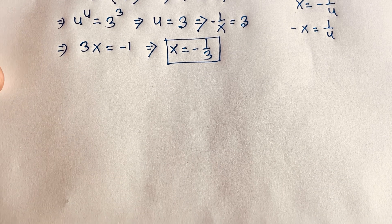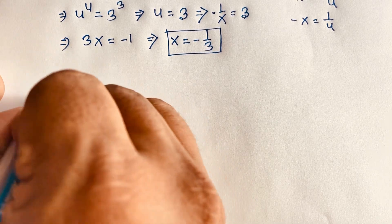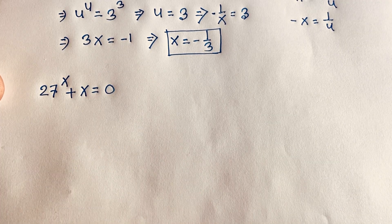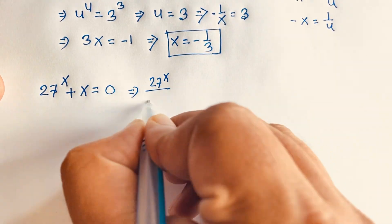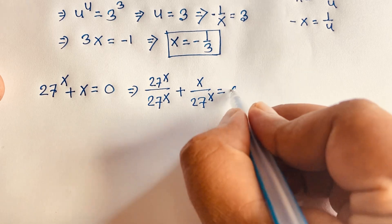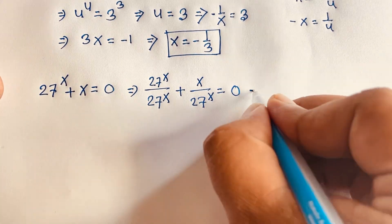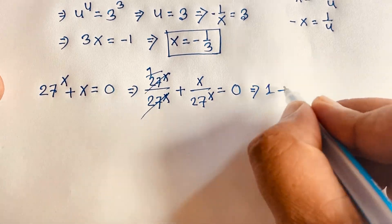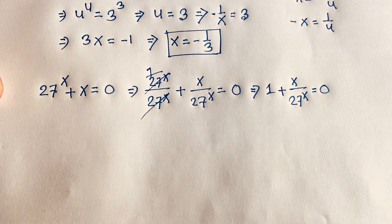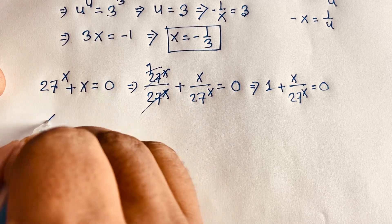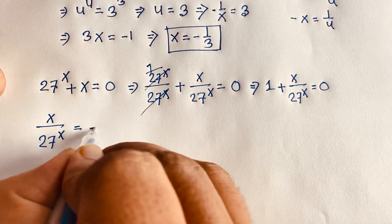Now I solve this question using another method — the Lambert W function. Our question is 27^x plus x equals 0. I divide both sides by 27^x. So we get: 27^x over 27^x plus x over 27^x equals 0 divided by 27^x, which is 0. This simplifies to 1 plus x over 27^x equals 0, so x over 27^x equals minus 1.